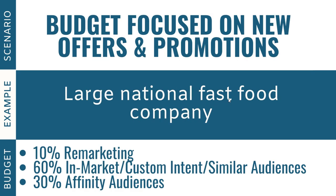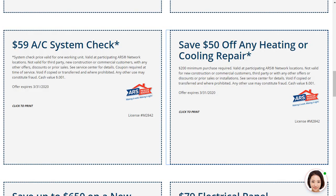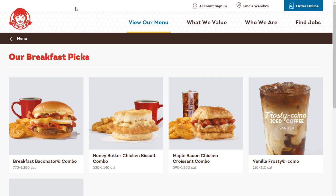Last but not least — scenario three: a budget focused on new offers and promotions. This would be more for large brands and companies that are constantly running promotions and want to get their newest deals in front of a targeted audience. My example is a large national fast food company. I would only do about 10-20% remarketing, a large portion in in-market, custom intent, and similar audiences, and a smaller portion into affinity audiences. For this example, let's say I'm promoting for Wendy's, who recently came out with breakfast.